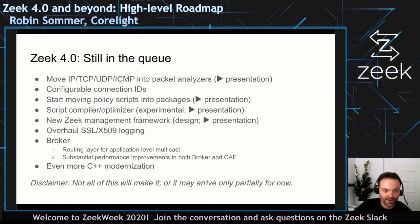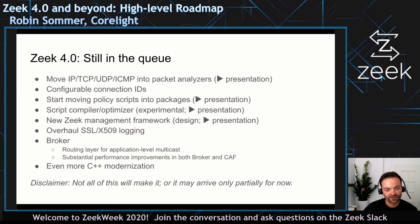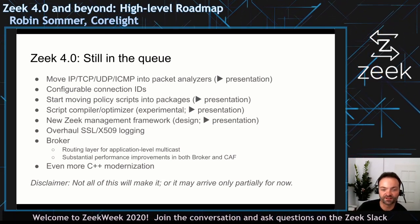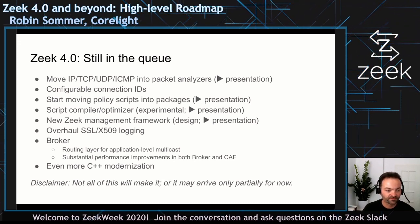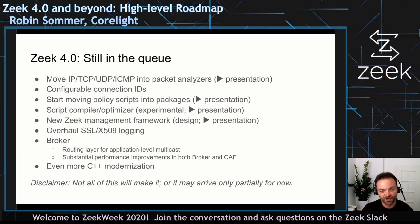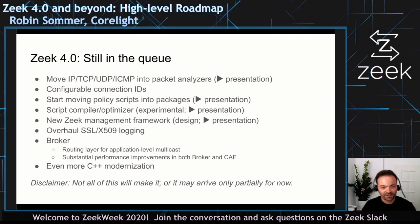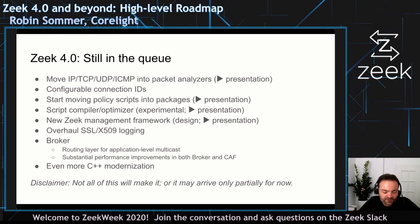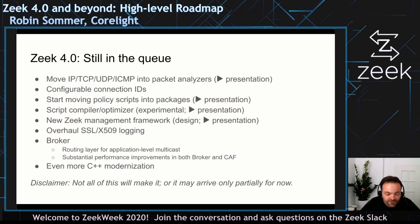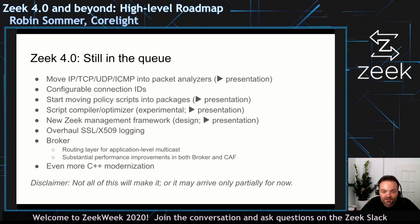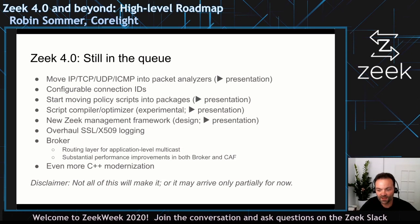There will be a separate presentation on this. We are working on a Zeek script compiler for optimizing execution speed — that's an experimental feature and quite a big change. We will at least partially be able to merge in the infrastructure for that. Vern will be talking about that later. We are also working towards a new Zeek management framework meant to eventually replace ZeekControl. For 4.0, the main goal is to finalize the design for that new framework, and there will be a separate presentation on it.